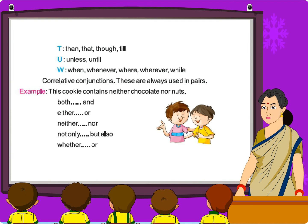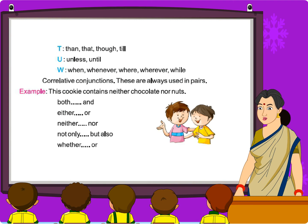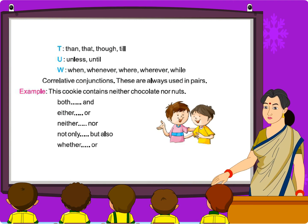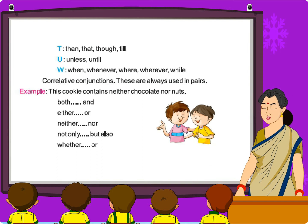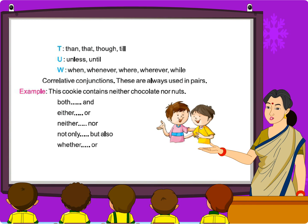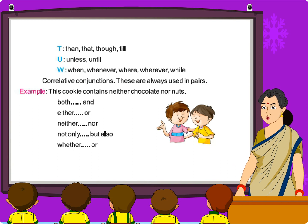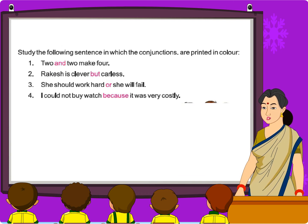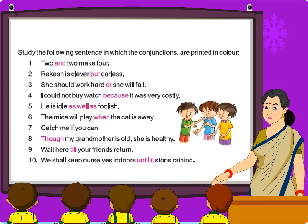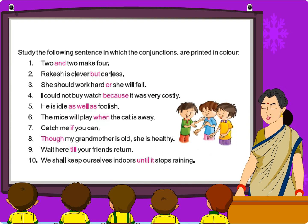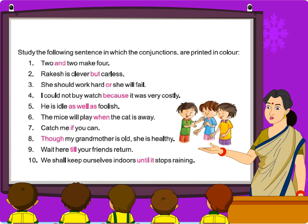Correlative conjunctions: these are always used in pairs. Example: this cookie contains neither chocolate nor nuts. The pairs are: both/and, either/or, neither/nor, not only/but also, whether/or. Study the following sentences in which the conjunctions are printed in color.